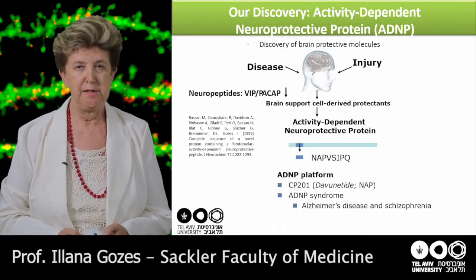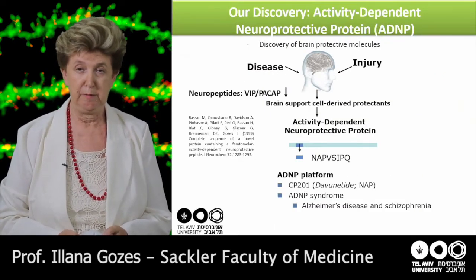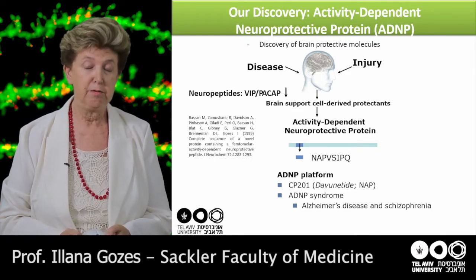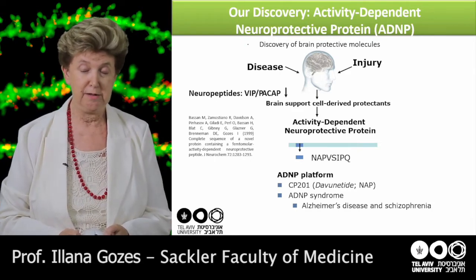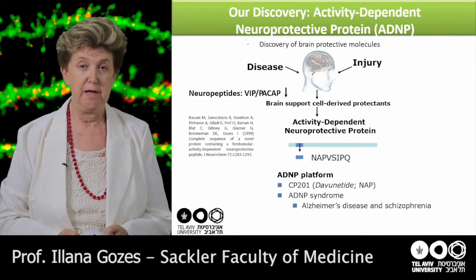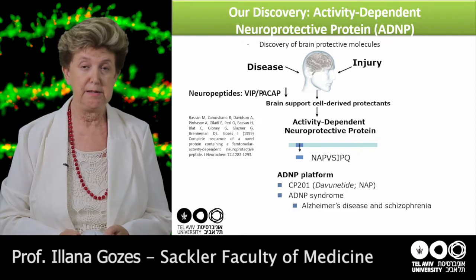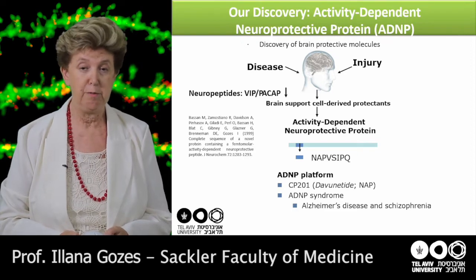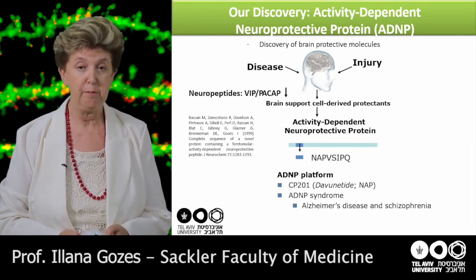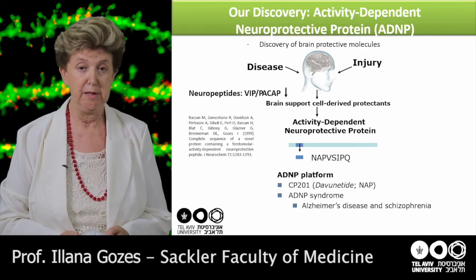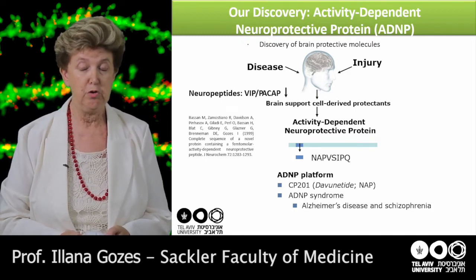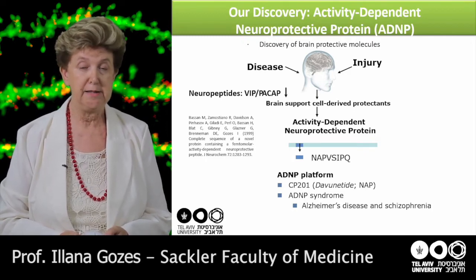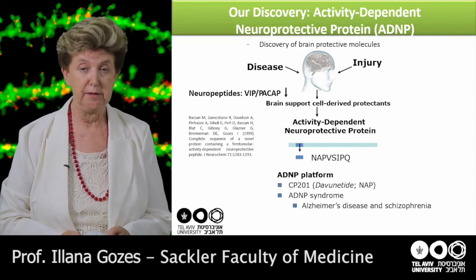We discovered Activity-Dependent Neuroprotective Protein, ADNP, about almost 20 years ago and we found it to be essential for brain formation. We also discovered a very small fragment of ADNP, NAP or NAPVSIPQ, that enhances the endogenous ADNP activity.